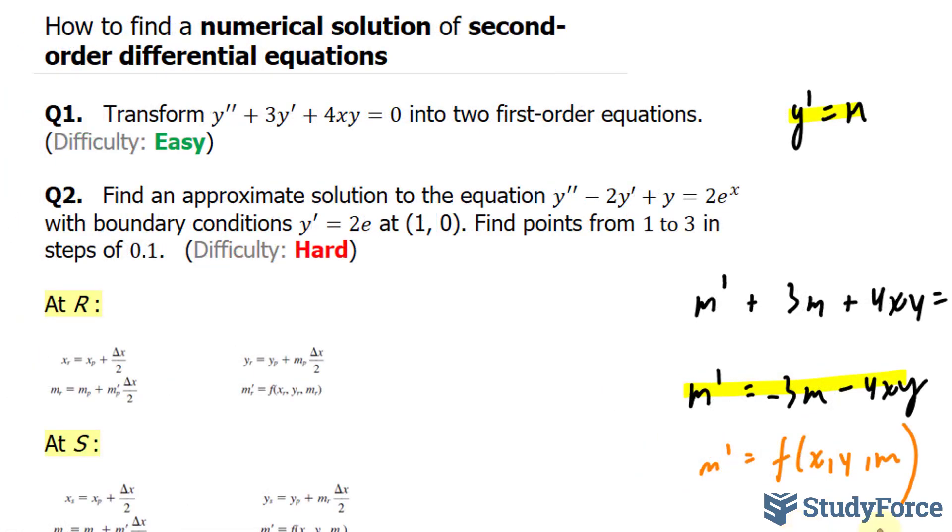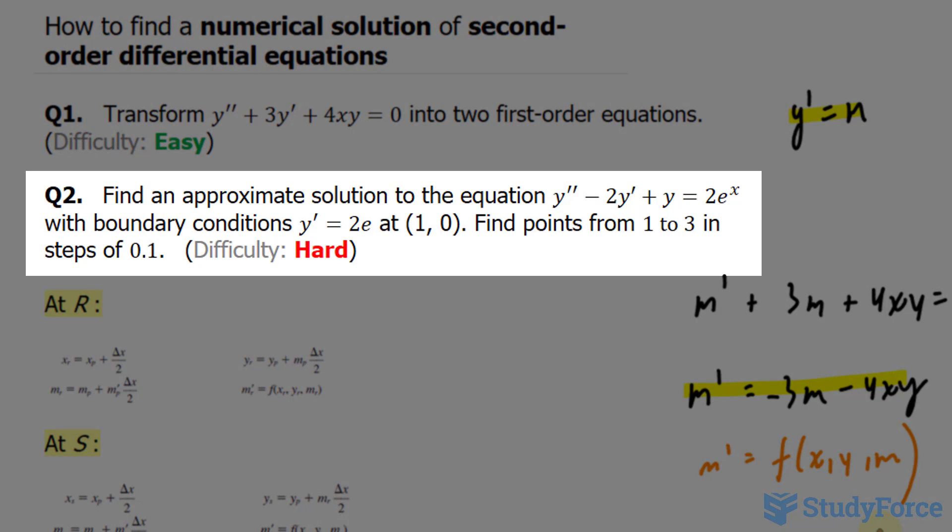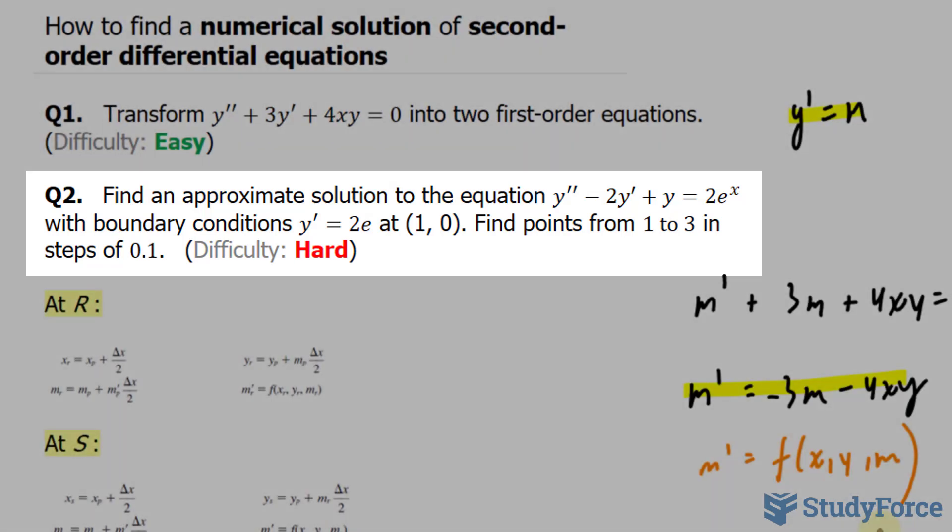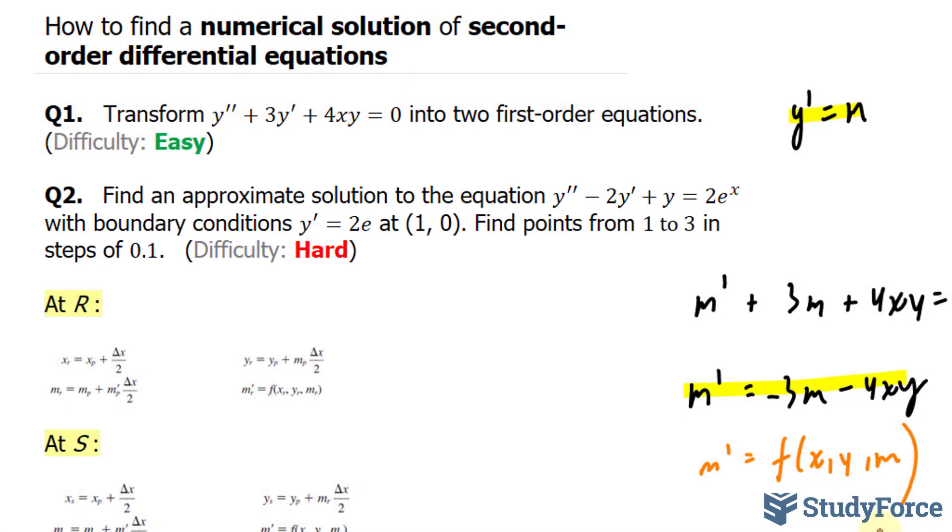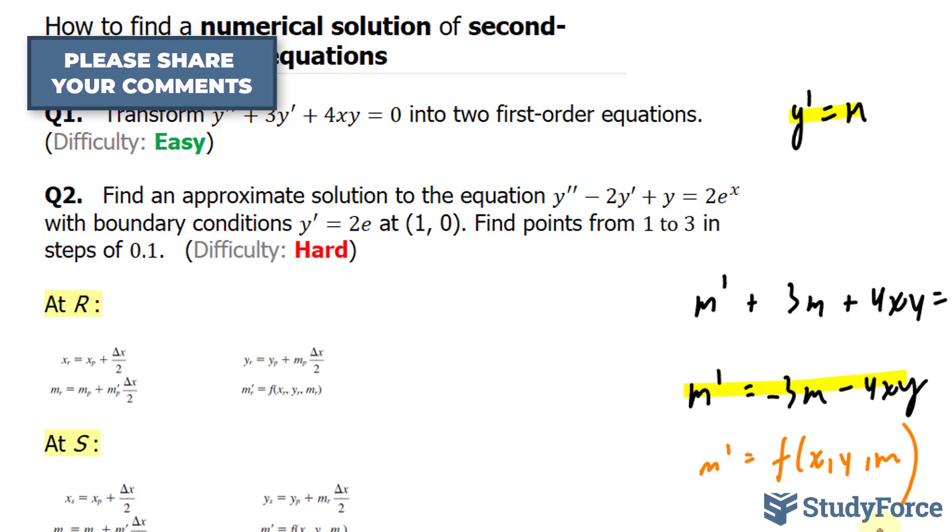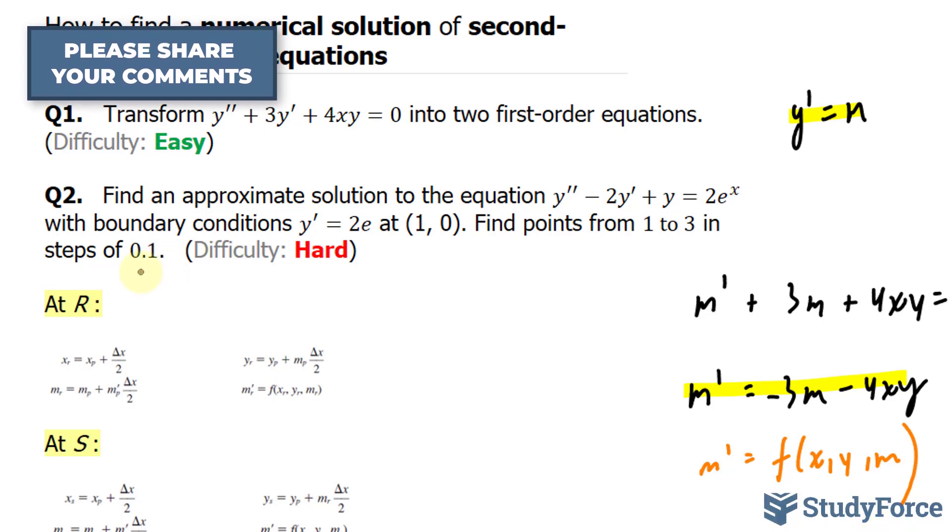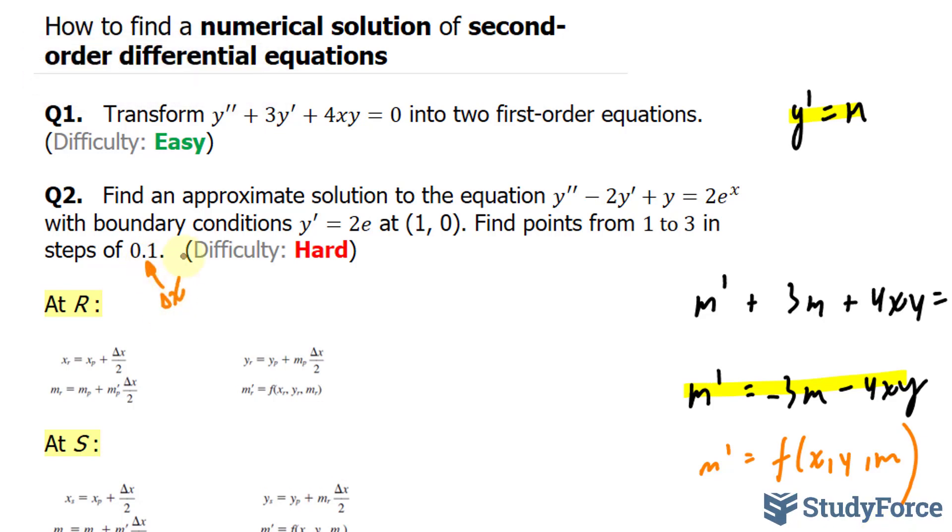Now that we've been introduced to this idea, let's move on to question number two. Find an approximate solution to the equation y'' - 2y' + y = 2e^x with the boundary conditions y' = 2e at the point (1, 0). Find the points from 1 to 3 in steps of 0.1. This will represent Δx.